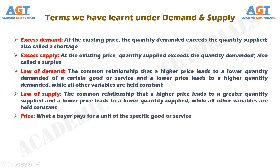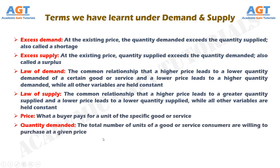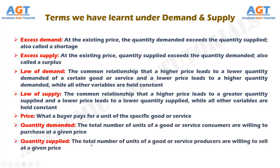Price is what a buyer pays for a unit of the specific good or service. The quantity demanded is the total number of units of a good or service consumers are willing to purchase at a given price. The quantity supplied is the total number of units of a good or service producers are willing to sell at a given price.